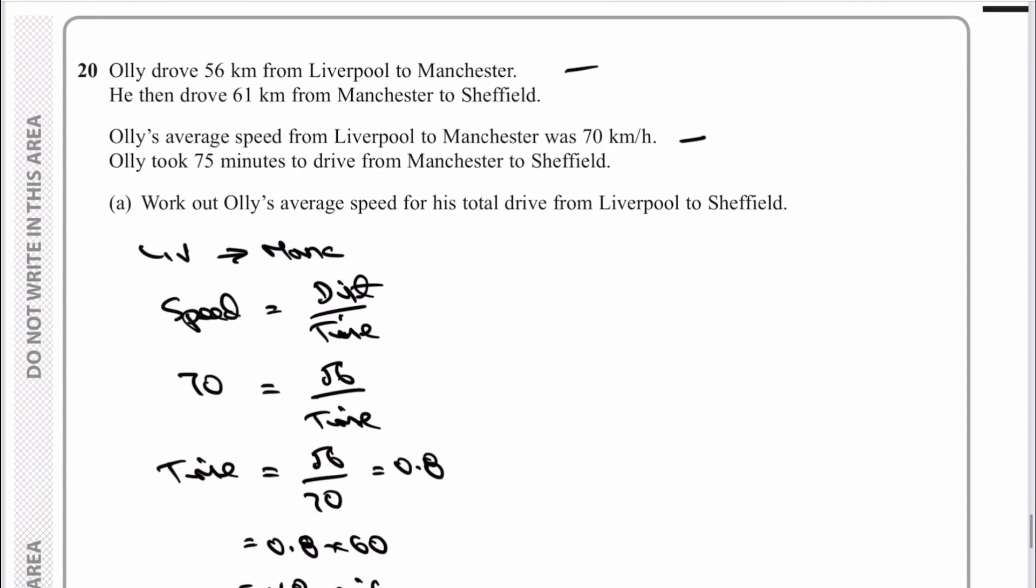Work out Ollie's average speed for his total drive from Liverpool to Sheffield. Liverpool to Sheffield, and again I'll write the formula: speed = distance ÷ time. The distance is 56 + 61, which is fairly straightforward. Bear in mind it is a calculator paper.